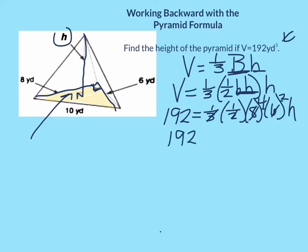So 192 equals 8h. Divide by 8 on both sides, and you get 24 equals h. So the height here is 24 yards.